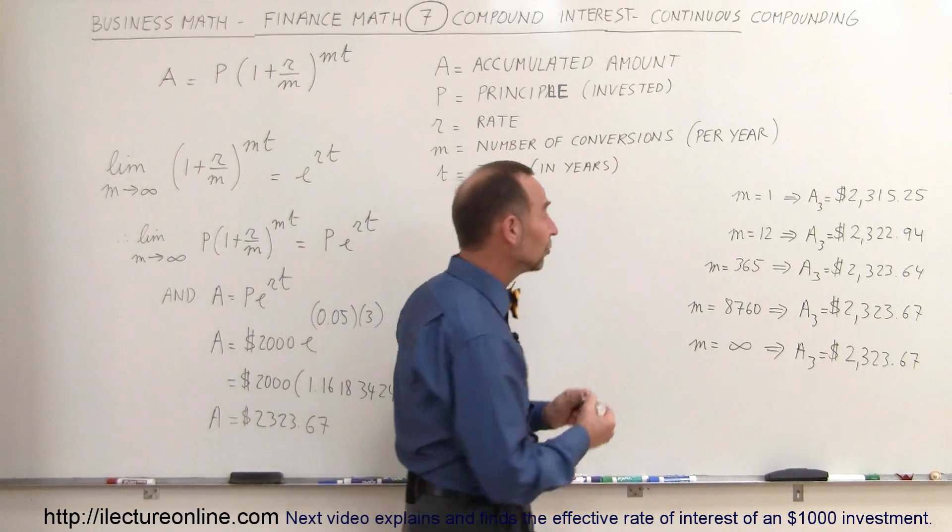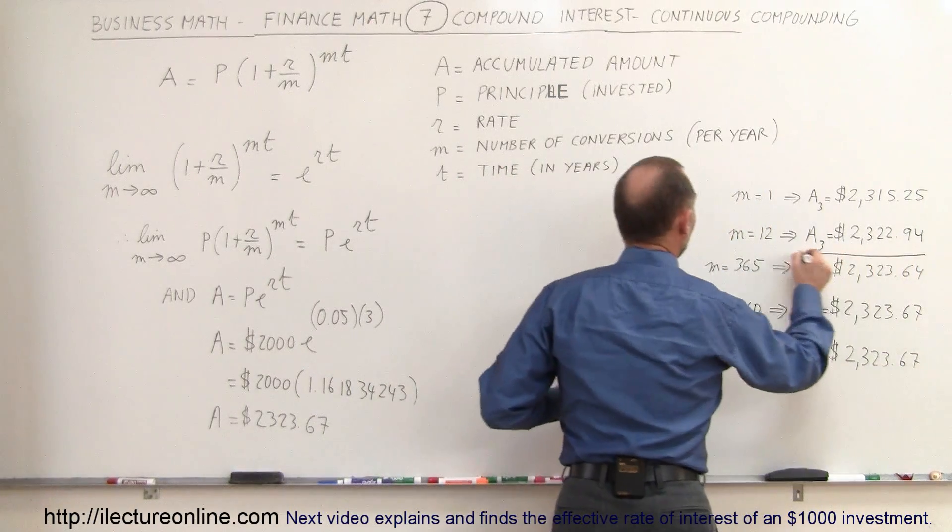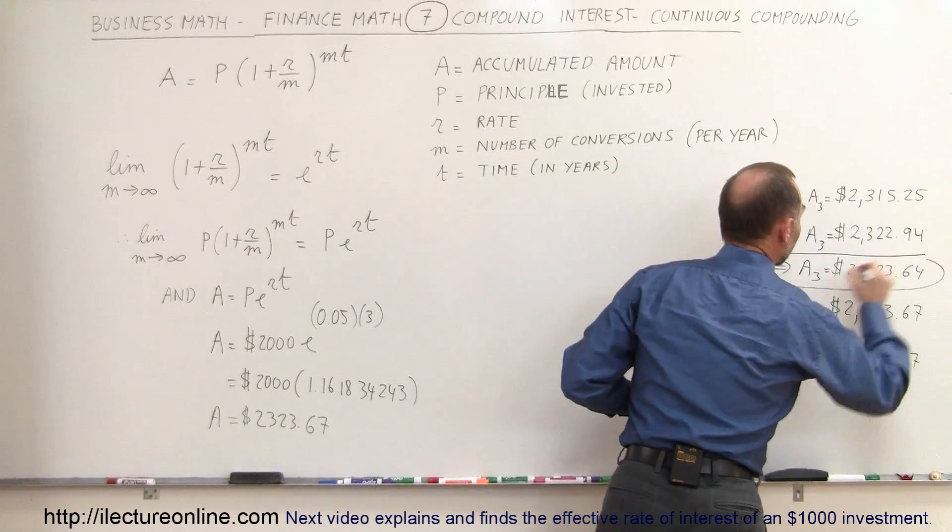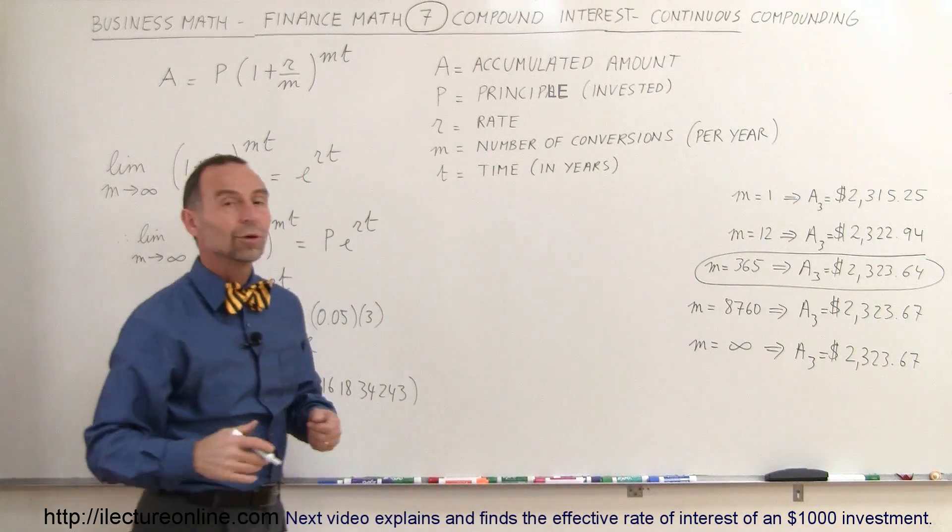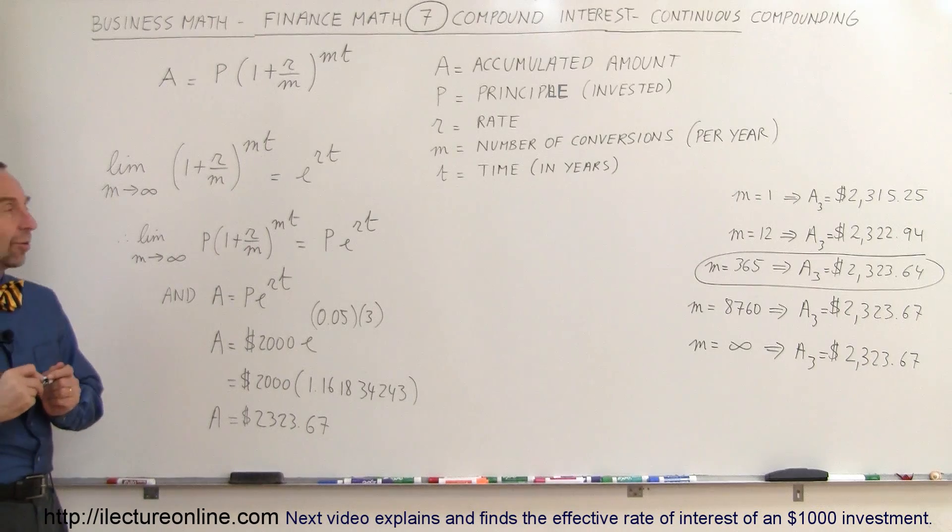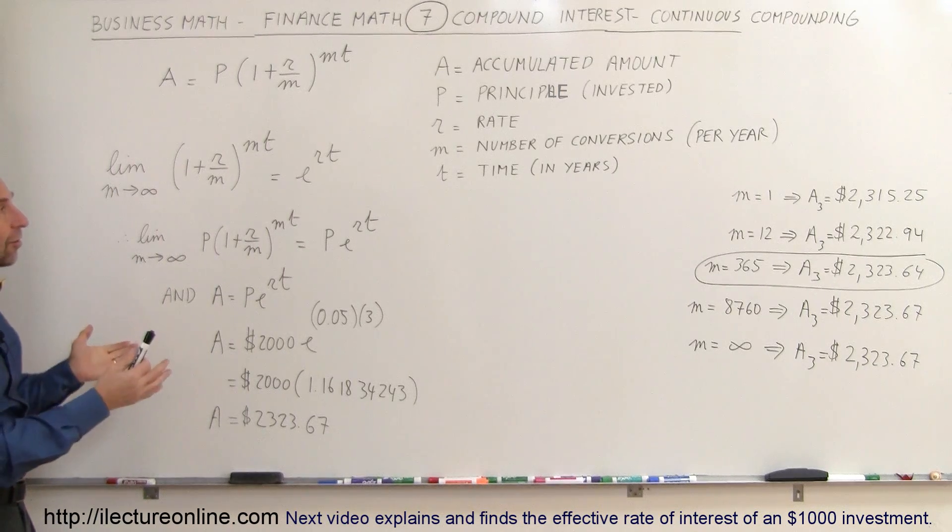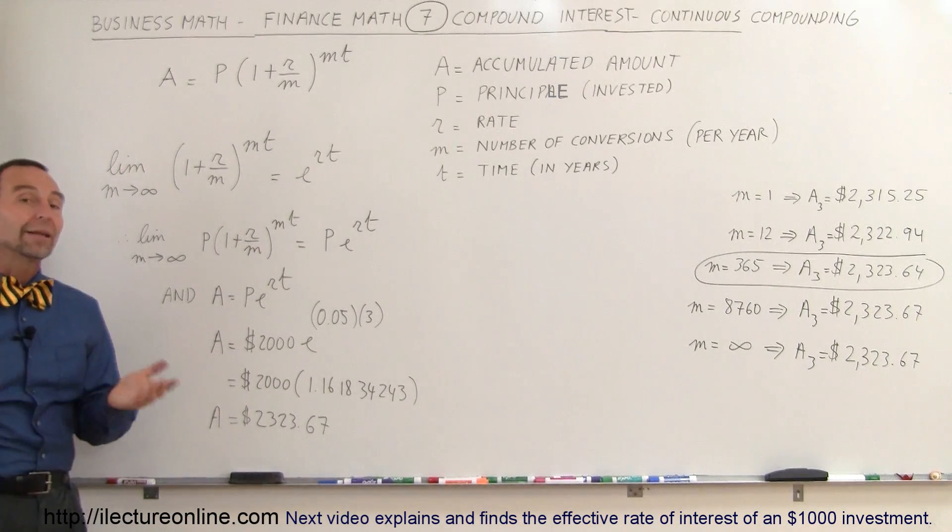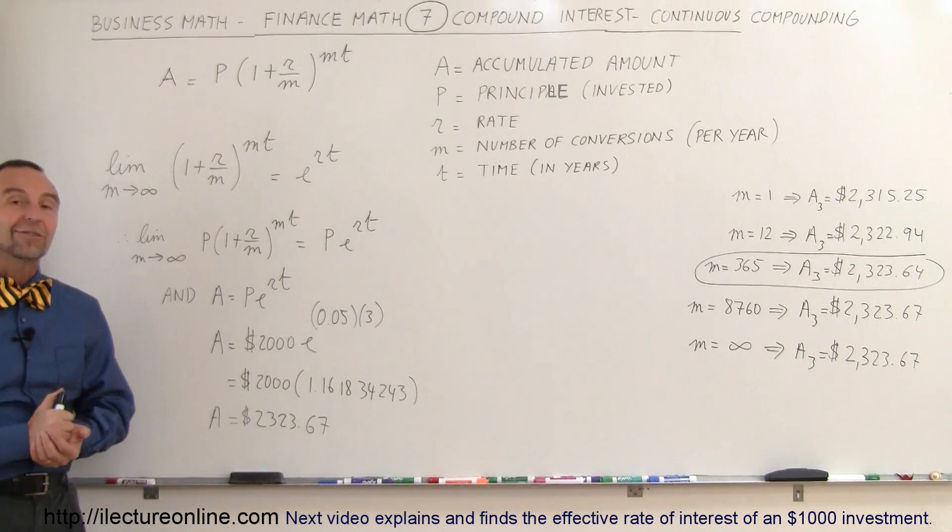So again, banks use the daily compounding, and so that's how we calculate on a daily basis how much interest we earn, and we add that to the principal. And that's how our banking system operates. So now you can see the various ways in which we do compounded interest, and that's how we do that.